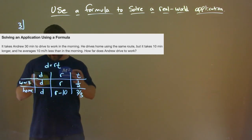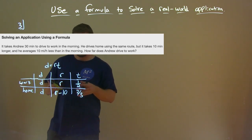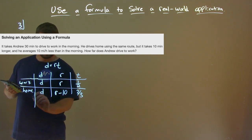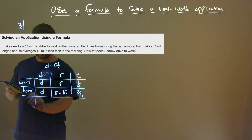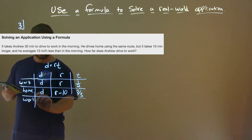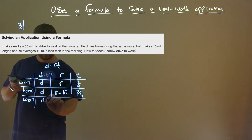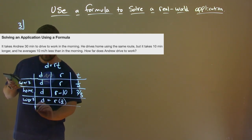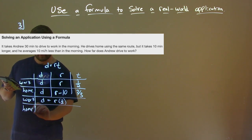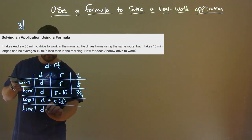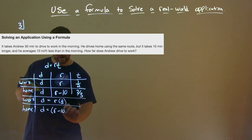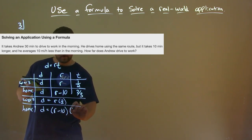We can set up an equation for each trip. To work: distance equals R times one-half. Going home: distance equals (R minus 10) times two-thirds.